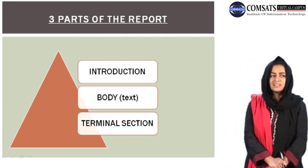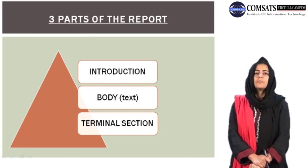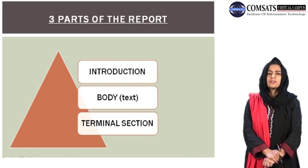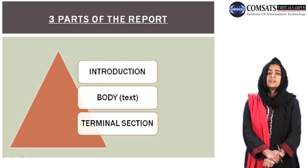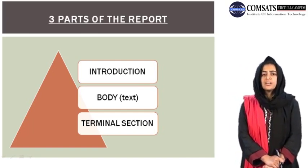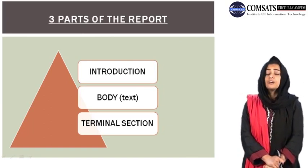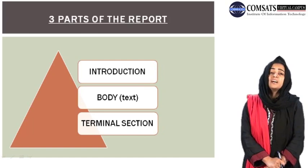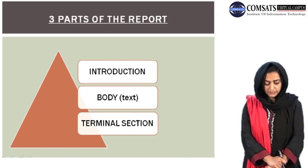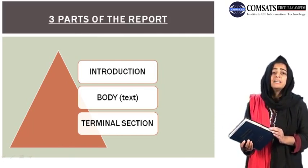Today we will be discussing what are the main three parts of a report. Your report can either be a long report or a short report. A long report is also called a formal report, and a short report is sometimes called an informal report. The difference between the two is that of the length. A short report normally cannot exceed 10 pages. This course book in front of you is an example of a long report, beginning from 10 pages.